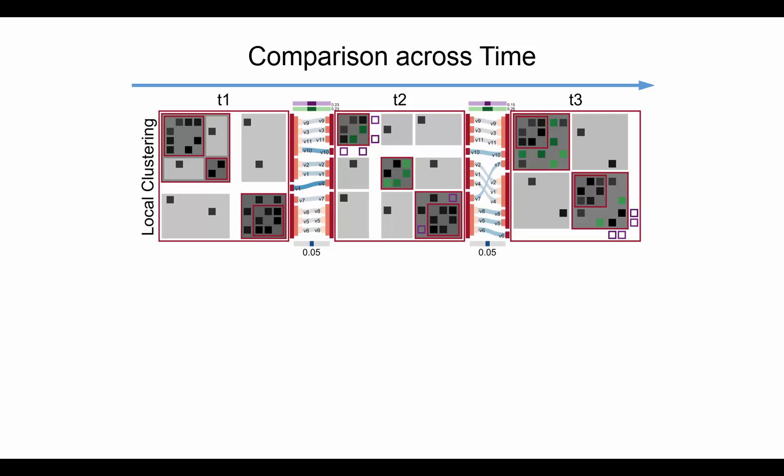A dissimilarity metric that describes the difference of containment in two hierarchies is introduced. This metric is mapped to the color of the curves. The metric for a single vertex can be used to compute the dissimilarity between two hierarchies, which is visualized by bars.